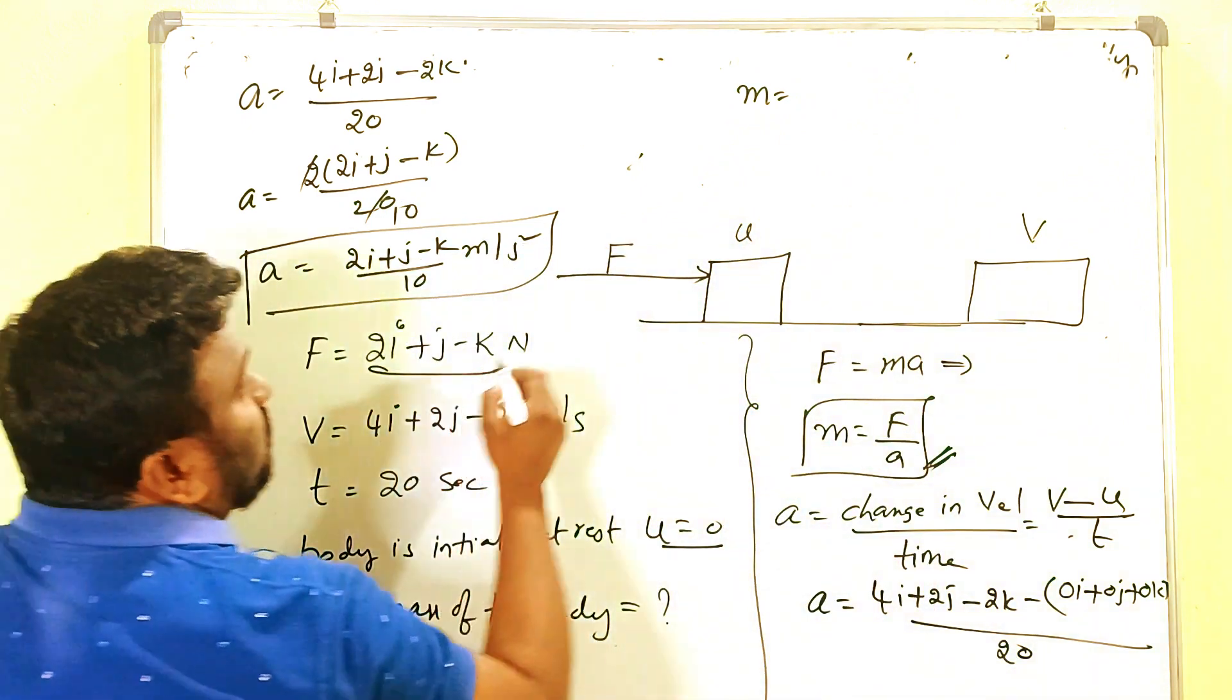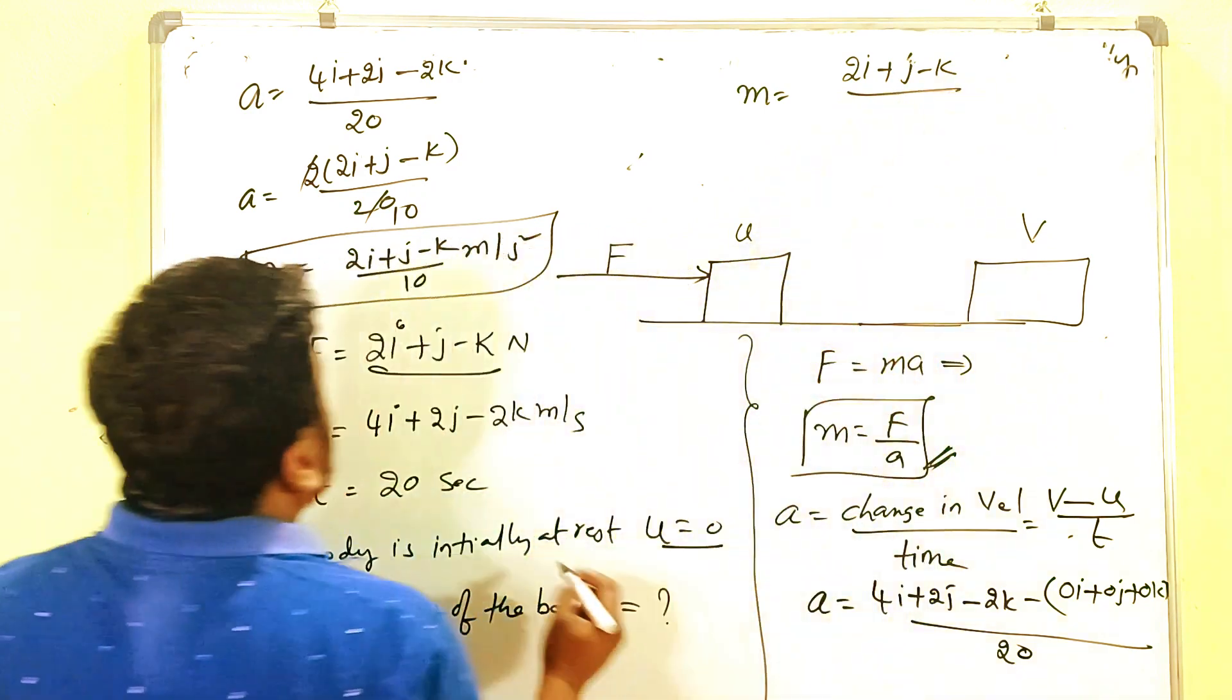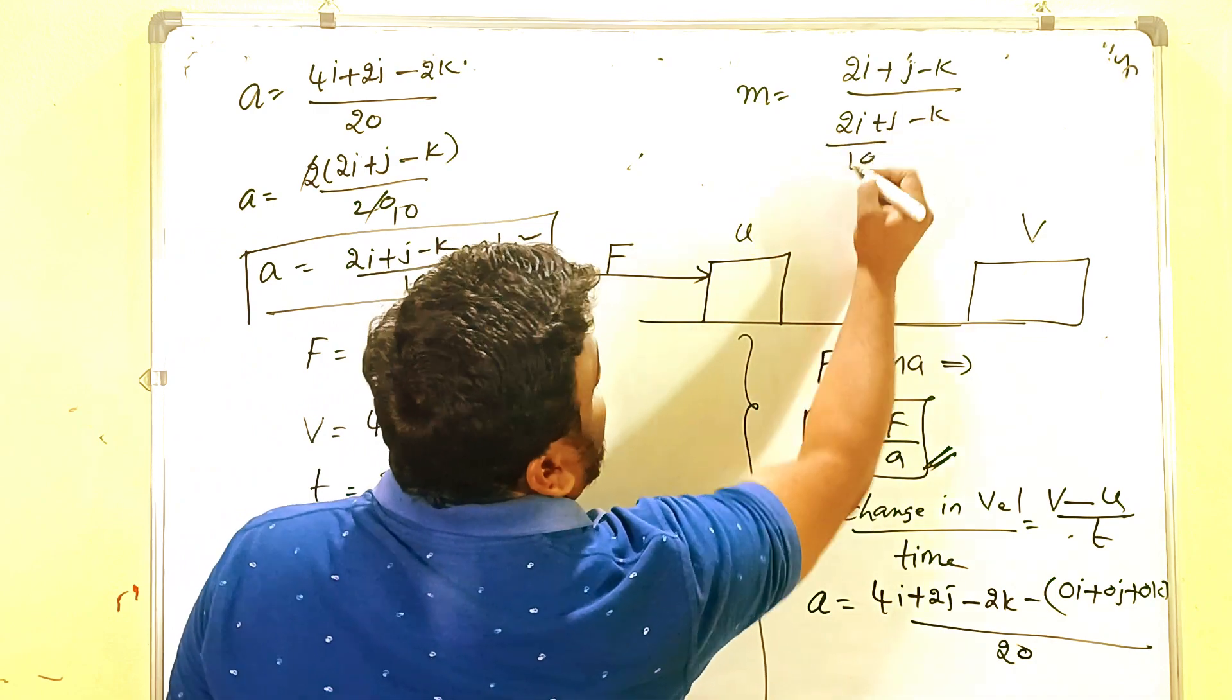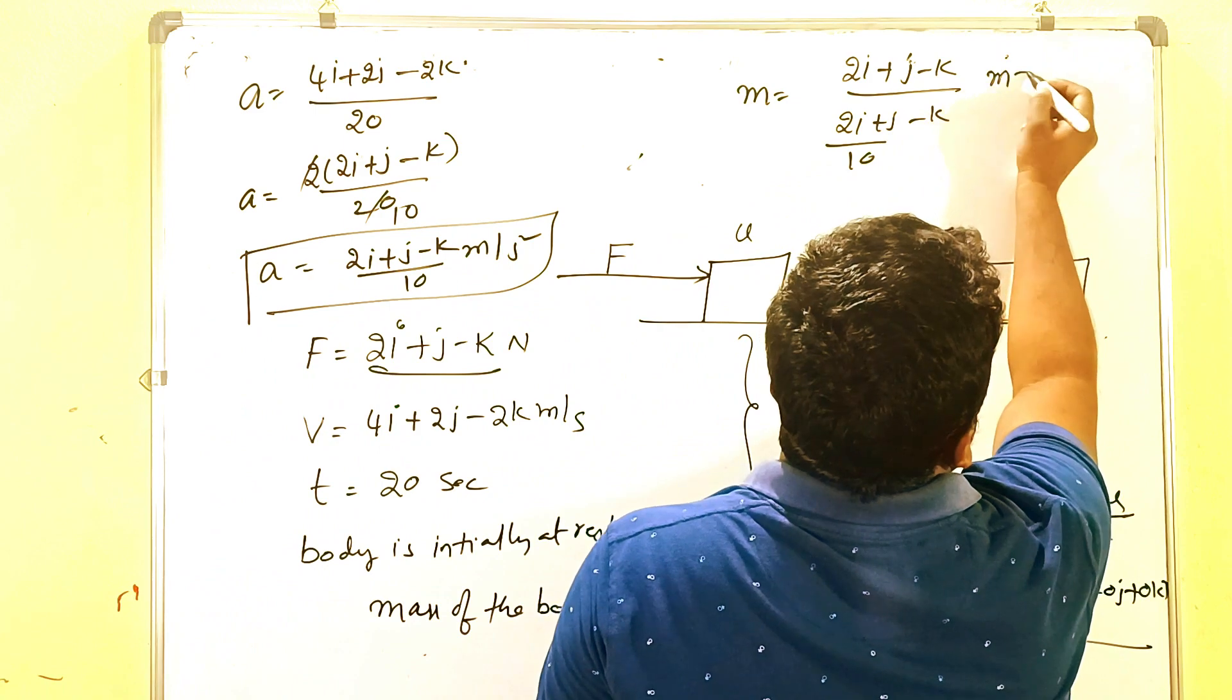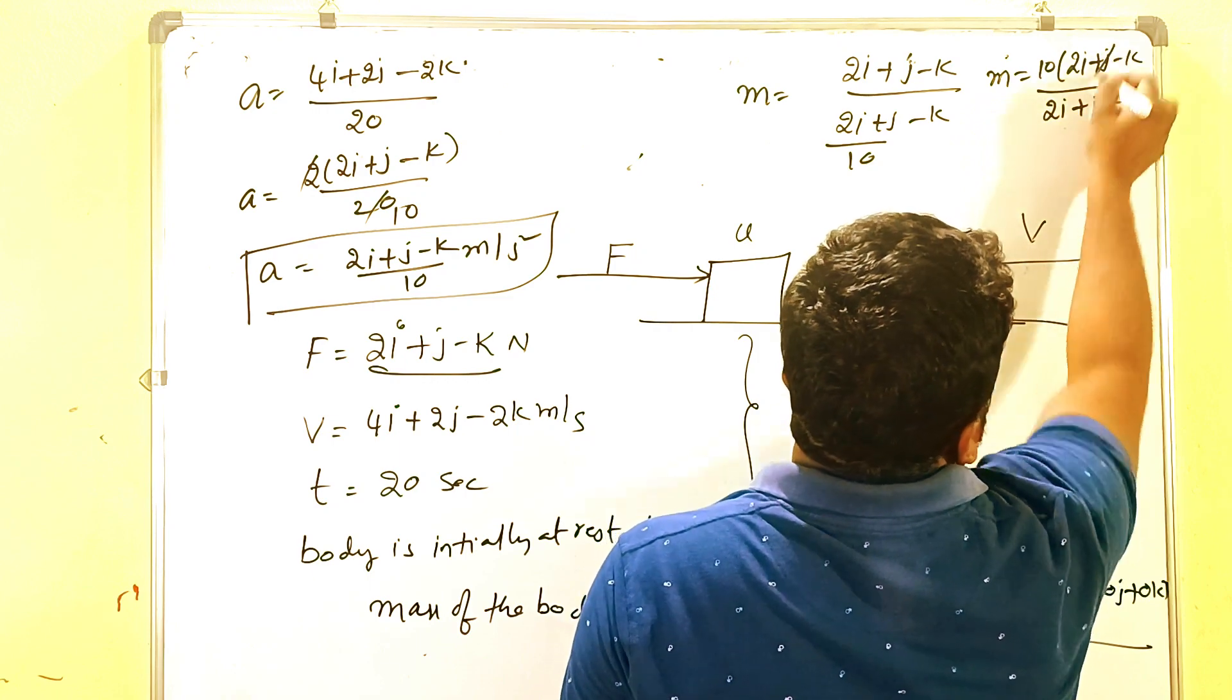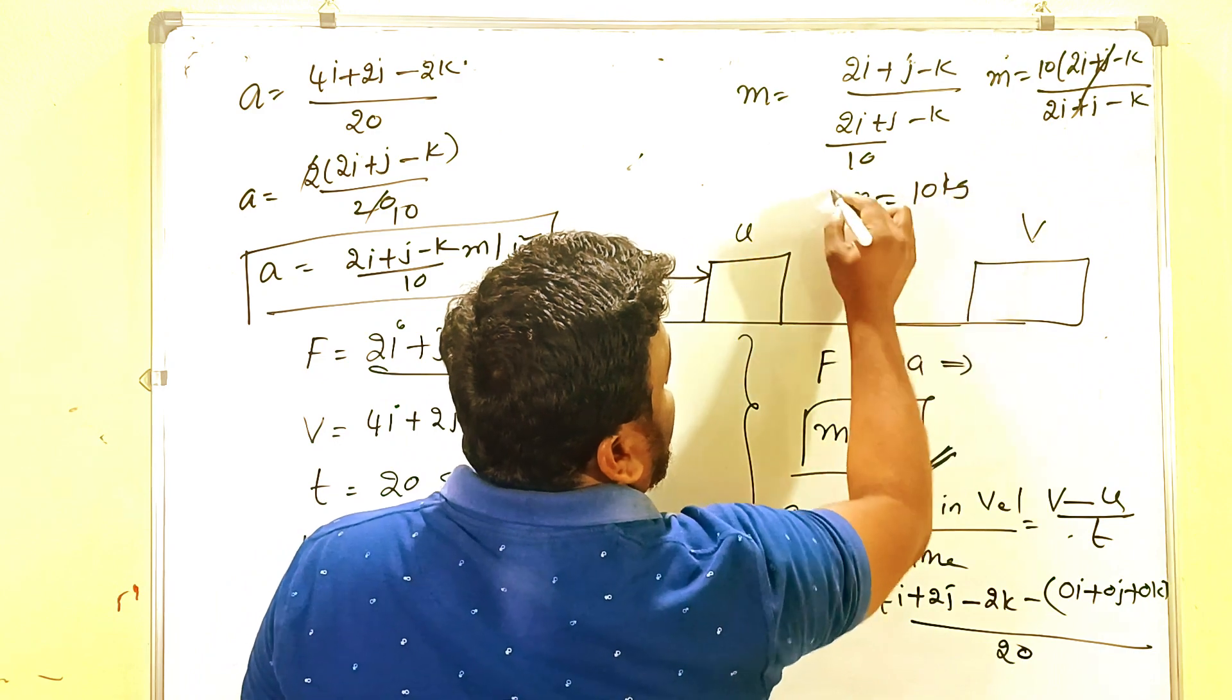2i plus j minus k. A is 2i plus j minus k by 10. Then we get M equals 10 times 2i plus j minus k divided by 2i plus j minus k. Then M equals 10 kg.